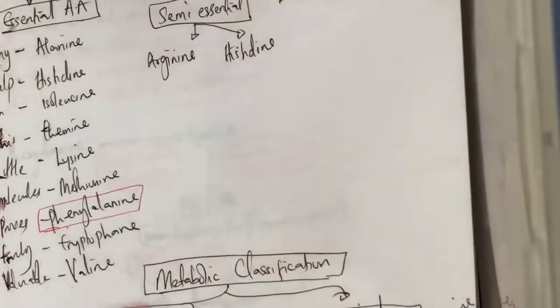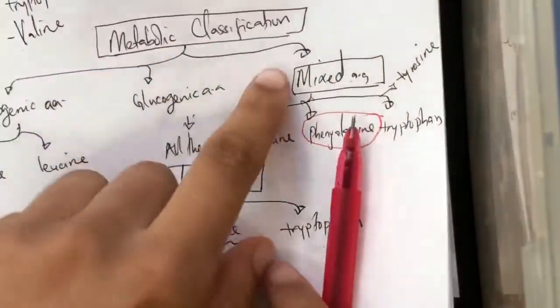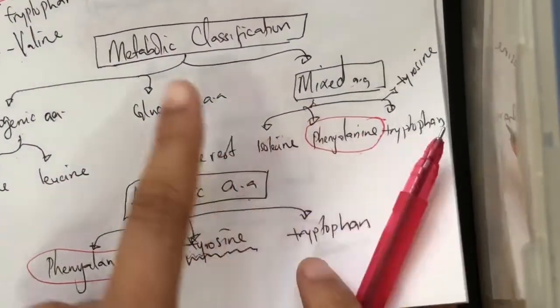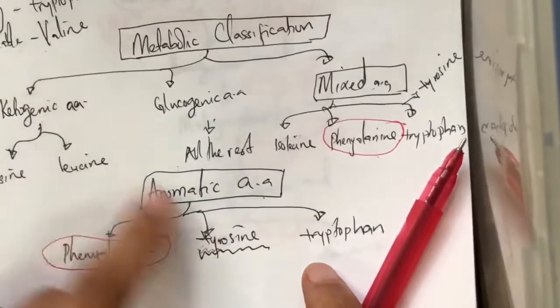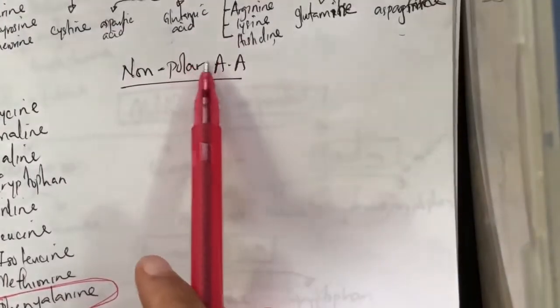Hey guys, we're going to be talking about a very interesting amino acid known as phenylalanine. If you can recall, we discussed phenylalanine in the essential amino acids. We also discussed phenylalanine in the mixed amino acids, that means it's both ketogenic and glucogenic. We discussed phenylalanine in the aromatic amino acids, and it's also a non-polar amino acid.